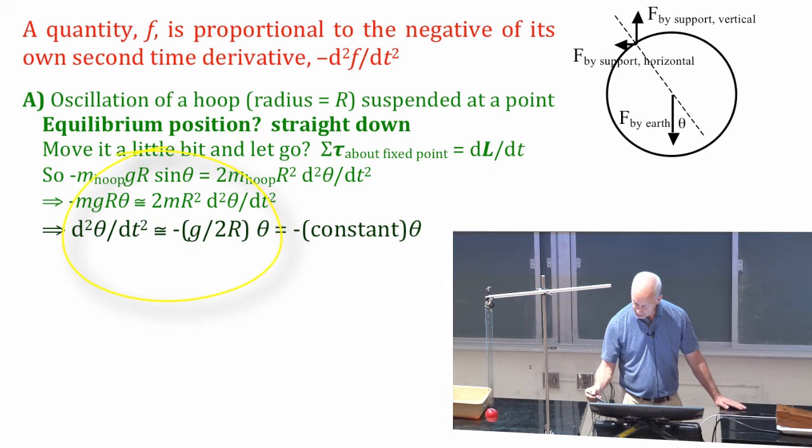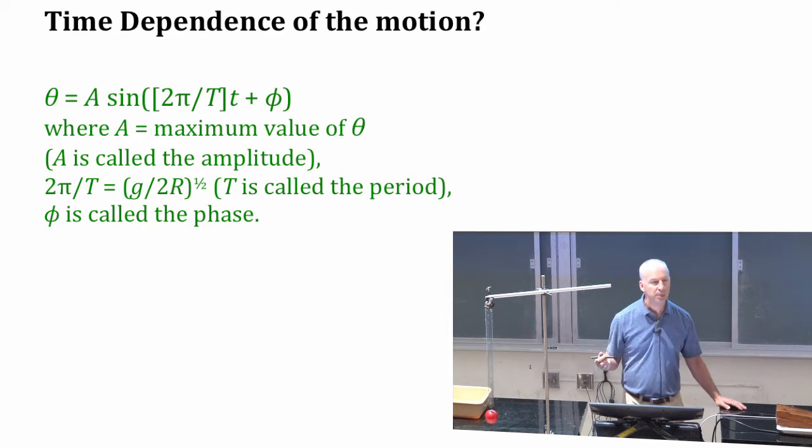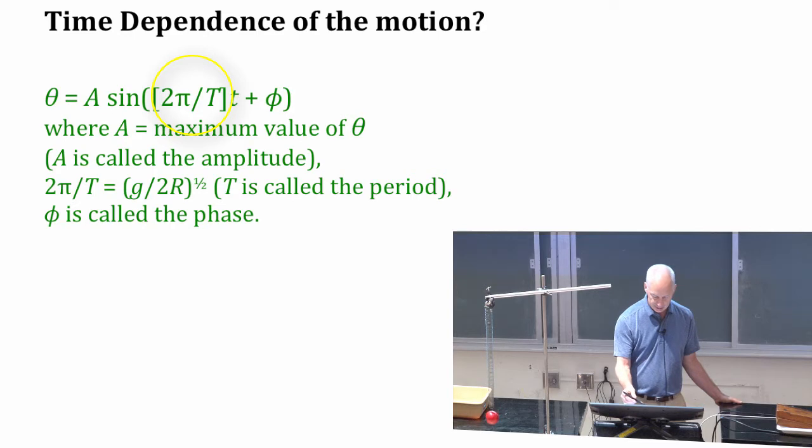That constant g over 2r, remember when you take the two derivatives you end up with two of those values, so when you take two derivatives you end up with this thing right here, 2π over T squared.